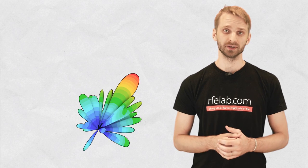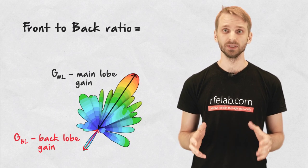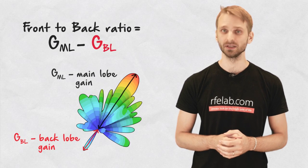Once we know the radiation pattern of an antenna, front-to-back ratio is the difference between the gain of the main lobe and the gain of the back lobe.